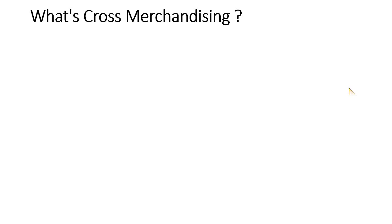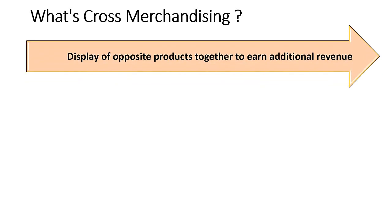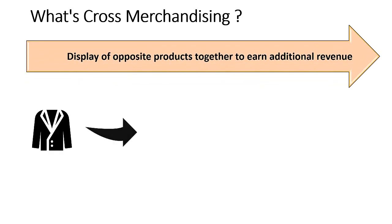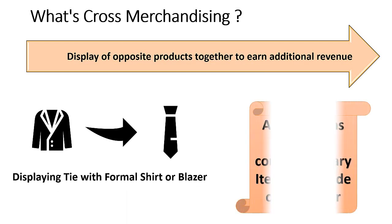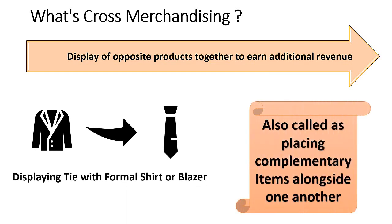Cross merchandising is the display of complementary products together to earn additional revenue for the store. Products from different categories are kept together at one place for increasing the sale. It is also called placing the complementary items alongside one another.